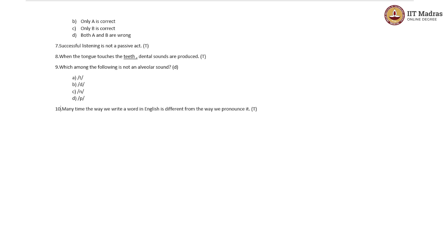The ninth question: which among the following is not an alveolar sound? When the tongue touches the ridge behind the teeth on the roof of the mouth, alveolar sounds are produced. All the sounds except option D are alveolar sounds. Option D is 'p' — and the 'p' sound is a labial sound.